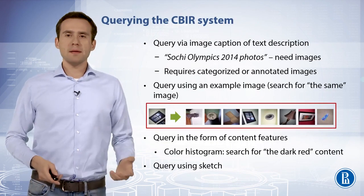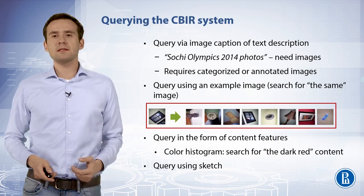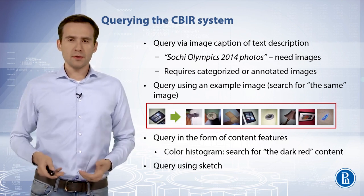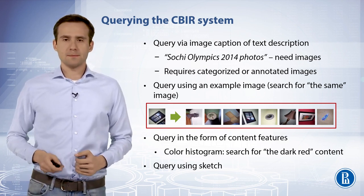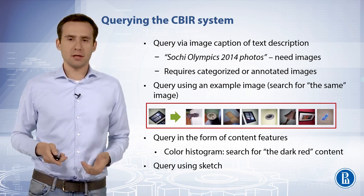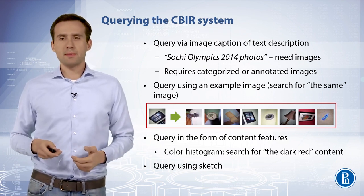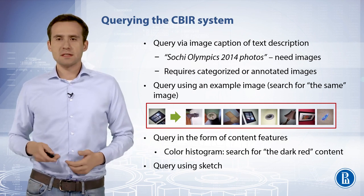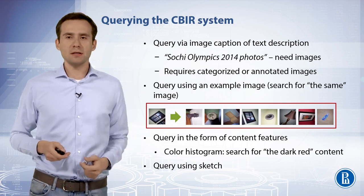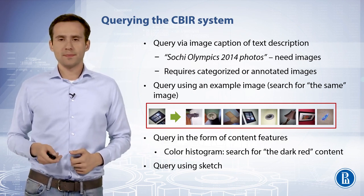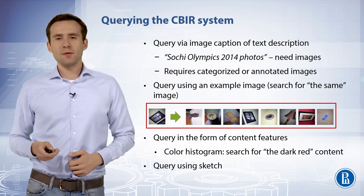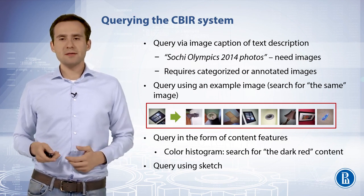A user query may be specified in a number of ways. For instance, a user may specify a textual description or image attribute, but in order to match those we would require image annotation to be present. A query may be made using an example image, with the task of searching for images containing the same object. We could also describe an image in terms of certain characteristics such as texture or color histogram, or we could specify a query by sketching what should be present in the image. The latter, however, is only very rarely used in practice as of late 2017. In this video we will only consider answering queries made using example images.